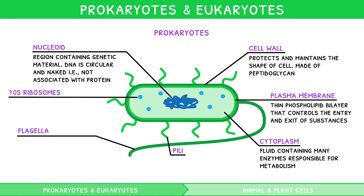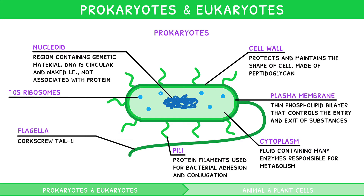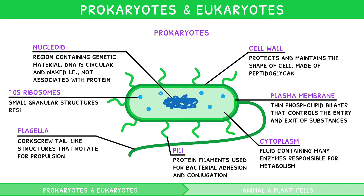Pili are protein filaments used for bacterial adhesion and conjugation. Flagella are corkscrew, tail-like structures that rotate for propulsion. Ribosomes are small, granular structures responsible for synthesizing protein. In prokaryotes, they are of size 70S.